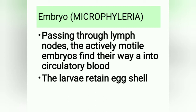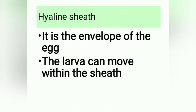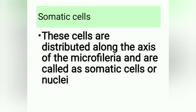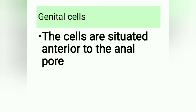Embryo (microfilaria): passing through lymph nodes, the actively motile embryos find their way into the circulatory blood. The larvae retain the eggshell hyaline sheath — the envelope of the egg — and the larva can move within the sheath. Size: measures about 275–300 × 8–10 micrometers. Somatic cells: these cells are distributed along the axis of the microfilaria and are called somatic cells or nuclei.